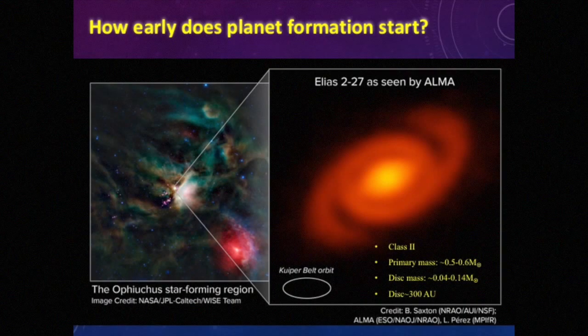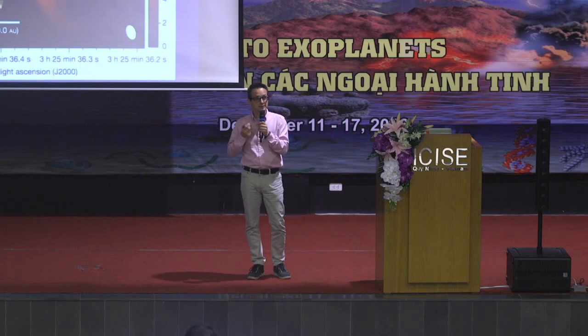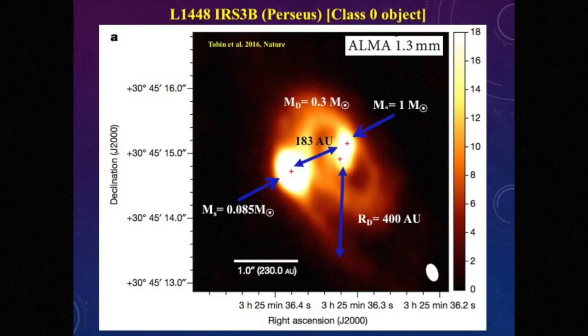This is another disk that shows these spiral arms — this is a class 2 disk. And finally, a disk that shows signs of gravitational fragmentation, of breaking up. So here you have a binary of about one solar mass, and a disk which is very large — about 400 AU in radius — and relatively massive.